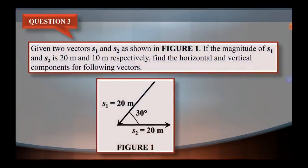Question number 3. Soalan number 3 adalah mengenai 2 vektor S1 and S2 as shown in figure 1. If the magnitude of S1 and S2 is 20 meter and 10 meter respectively, find the horizontal and vertical component for the following vectors. Kita ada vektor S1 20 meter dan kita ada S2, ini adalah 10 meter. Dan kita ada sudut from the horizontal is 30 degree.